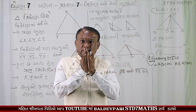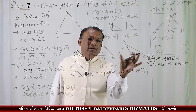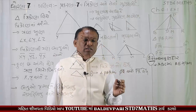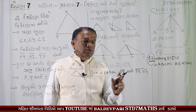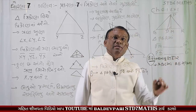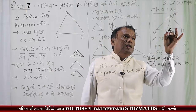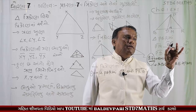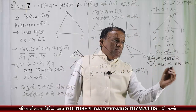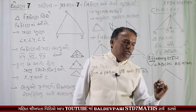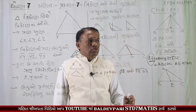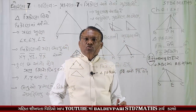એક કાગળ ને વાળીને ત્રિકોણ બનાવો. એ ત્રિકોણ બનાવો અને એના આધારે ચકાસો. PM = QM = RM - આ બરાબર આવે છે. મધ્યયગા ગણ - ત્રણ બધી ને વચ્ચે છે.